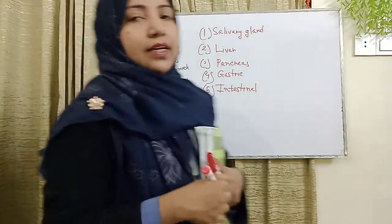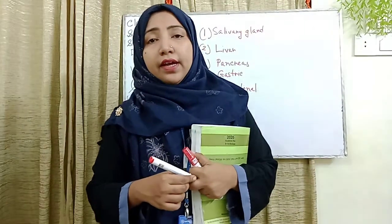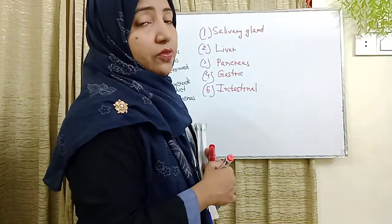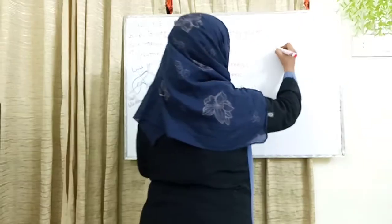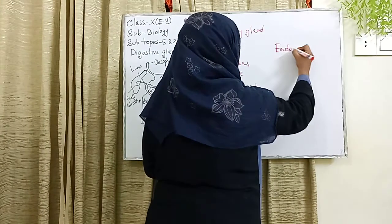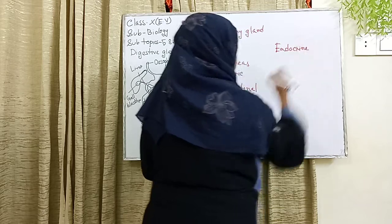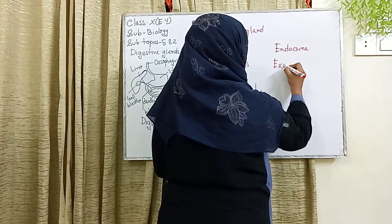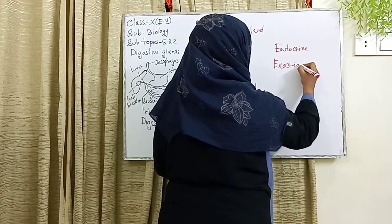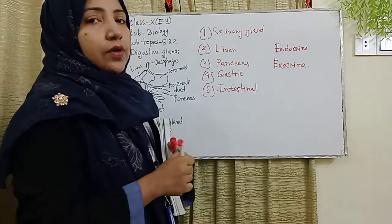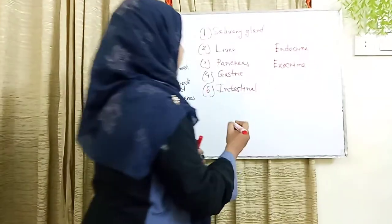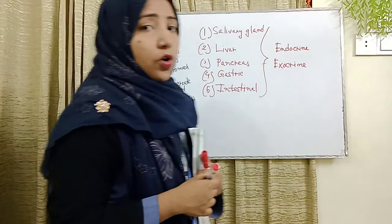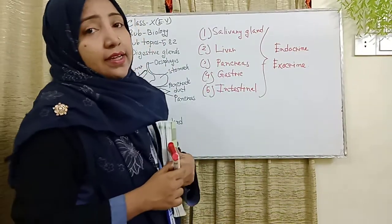Digestive glands are basically two types: one is the endocrine and another is the exocrine. The endocrine gland — E-N-D-O-C-R-I-N-E — and the exocrine gland. There are also five types under the exocrine gland. Endocrine glands basically secrete hormones, and exocrine glands basically secrete enzymes.